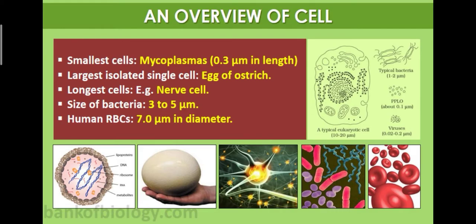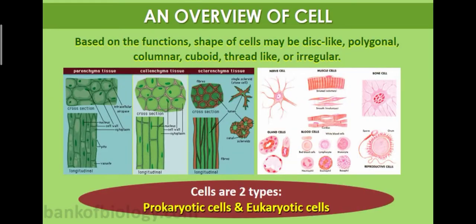You can see here a typical eukaryotic cell diagram. This is the plant cell and animal cell diagram we discussed in Classes 8 and 9. Based on their functions, the shape of cells may be disc-like, polygonal, columnar, cuboidal, thread-like, or irregular.